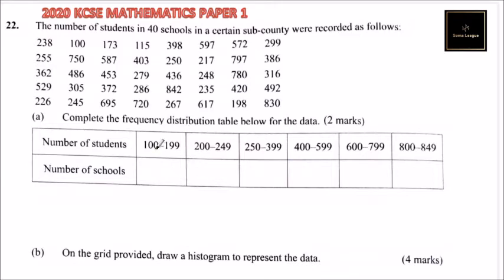So there are those schools that are in between 100 and 199. And this is 1, this is 2, this is 3, this is 4. So we had 4, so you would put the 4 there.